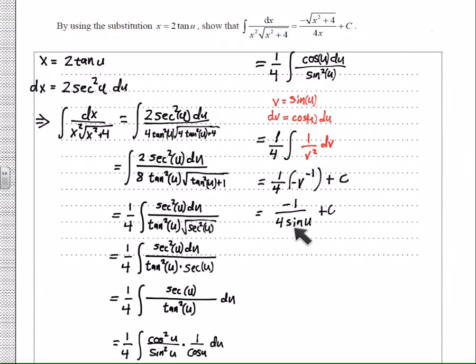Now that I have that, I have to actually get the sine of u so that it's back in terms of x, which is tricky because I know that 2 tangent u is equal to x, but I don't know what sine of u is in terms of x, so I'm going to have to know a little bit more about my trig.